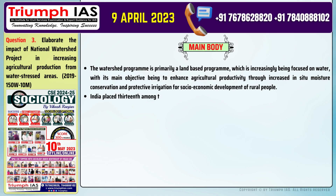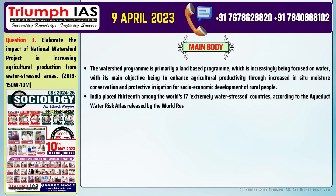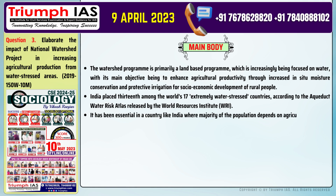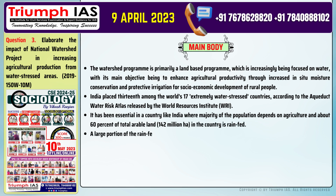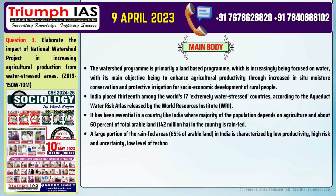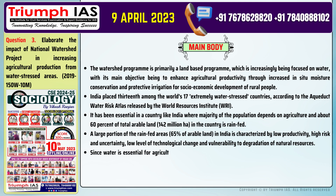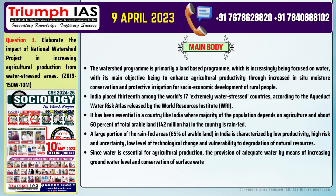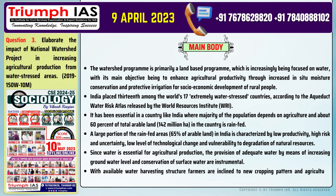Number two: India is ranked 13th among the world's 17 extremely water-stressed countries, according to the Aqueduct Water Risk Atlas released by the World Resources Institute (WRI). Number three: This is especially critical in India where the majority of the population depends on agriculture and about 60% of total arable land — 142 million hectares — is rain-fed. Number four: A large portion of rain-fed areas (65% of arable land) is characterized by low productivity, high risk and uncertainty, low technological change, and vulnerability to degradation of natural resources. Number five: Since water is essential for agricultural production, provision of adequate water by increasing groundwater levels and conservation of surface water are instrumental. Number six: With available water harvesting structures, farmers are inclined toward new cropping patterns and agricultural diversification.